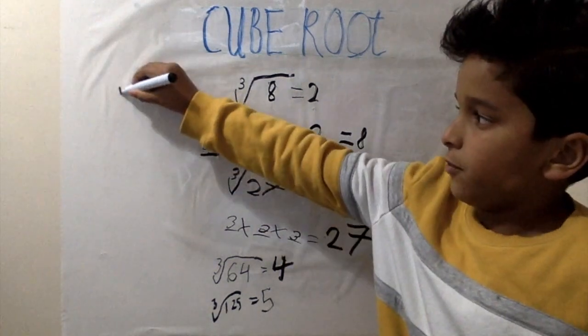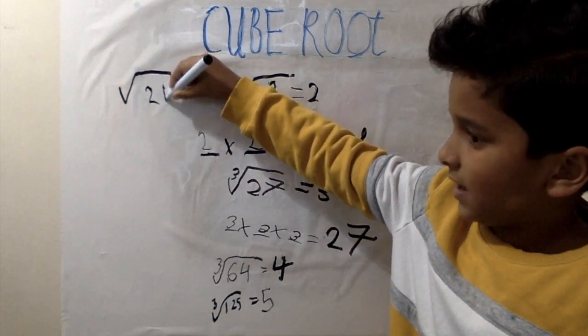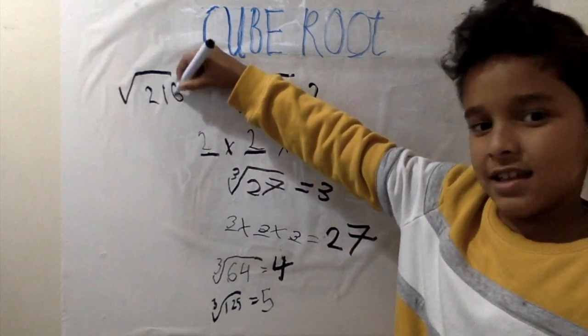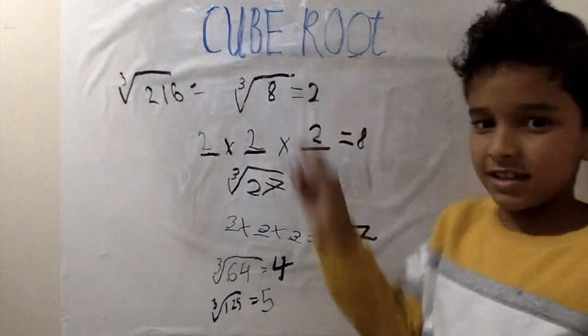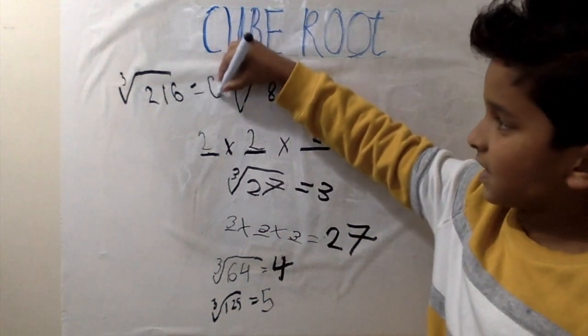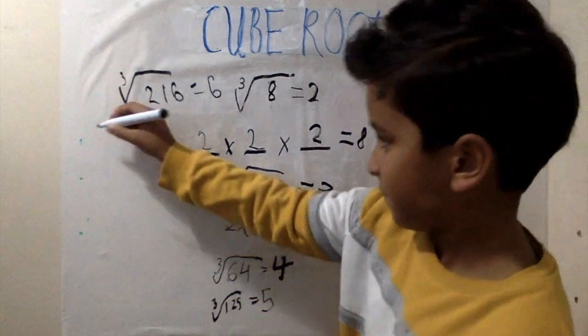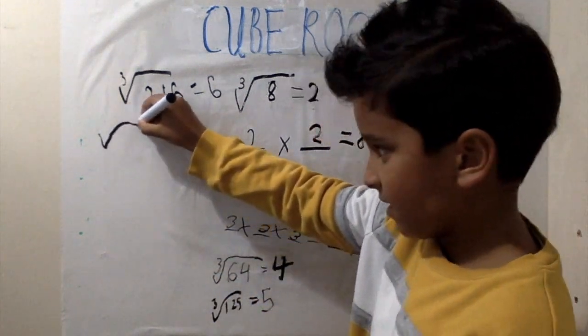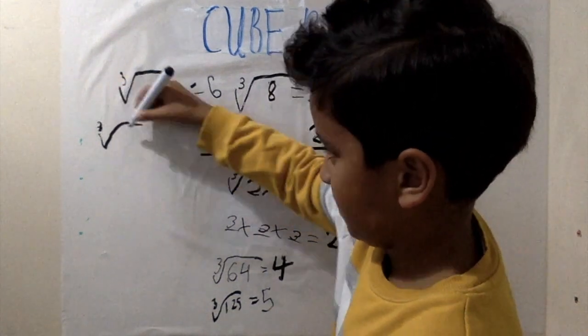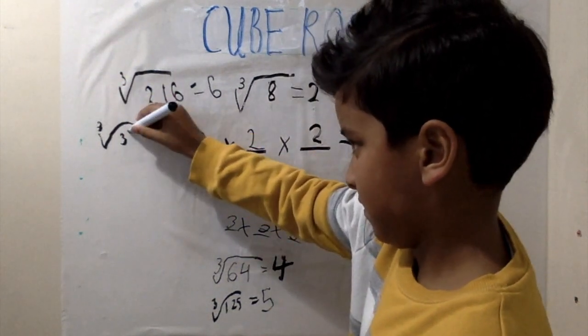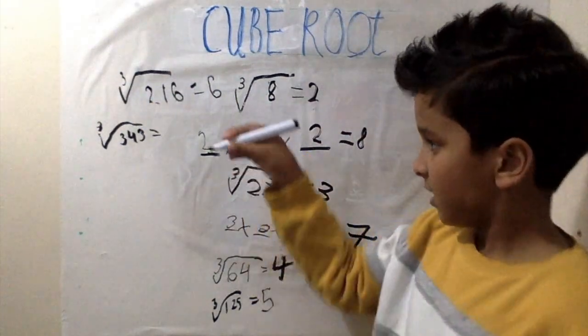Cube root of 216 equals 6. The cube root of 343 equals 7.